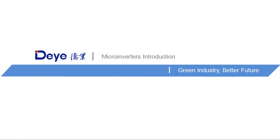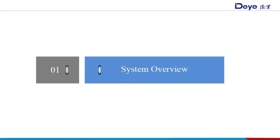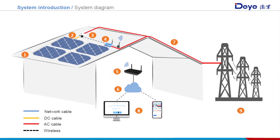Hello, today I'm going to give a simple introduction about Deye microinverters. This is the Deye microinverter system diagram, including PV module, microinverter, ECD, router, and so on. The microinverter converts DC current to AC current from the PV module and powers the load. If there is excess energy, it can be sold to the grid. The plant information can be monitored by PC and smartphone when connected.